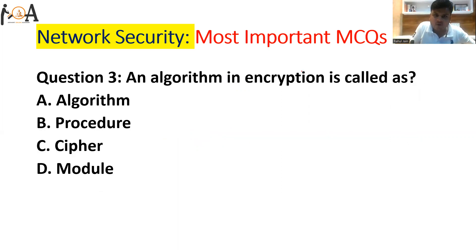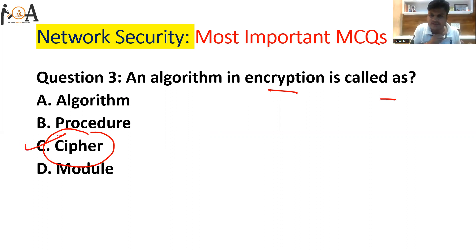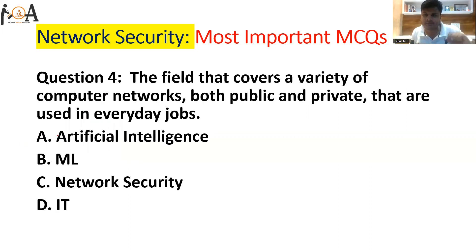Question number three: an algorithm in encryption is called what? When an algorithm is used for encryption purposes, the technical term is cipher. Option C is the correct one.